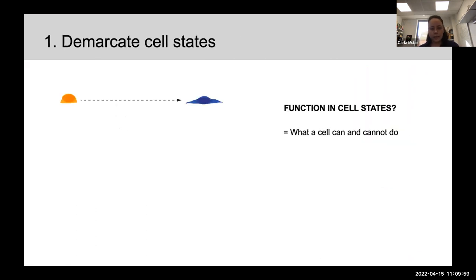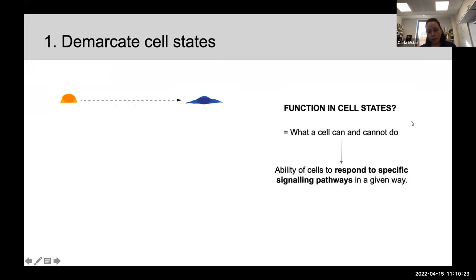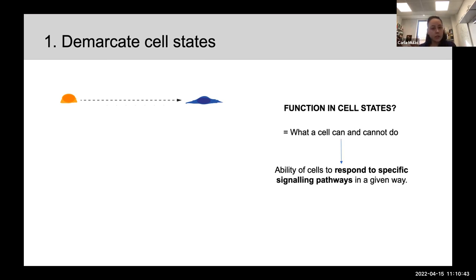How do we define cell states? We said we want to take a functional-based approach. What is the function of a cell, and how do we quantify it? I would argue that for most biological processes I'm interested in — development and homeostasis — the function of a cell is what the cell can or cannot do. Ultimately, this can be condensed to the ability of cells to respond to signals in a specific way.